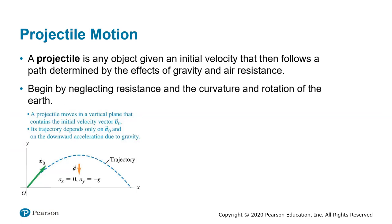So what is a projectile? It's an object given an initial velocity that then follows a path determined entirely by the effects of gravitational acceleration and air resistance. For example, when you're pitching a ball in baseball, shooting bullets from a gun, or even jumping from the ledge of a pool, you are giving yourself an initial velocity. Doing a cannonball also makes you a projectile. Another vocabulary word is trajectory — the path that the projectile follows.